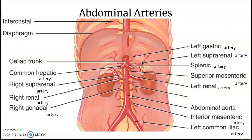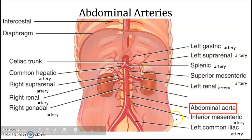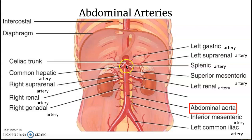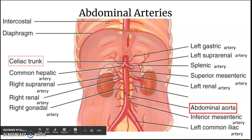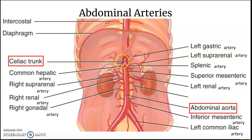Moving on to the abdominal arteries. I always try to identify the largest vessel first. This is the abdominal aorta — it's in the abdominal cavity and it's the aorta. We're going to start off with the celiac trunk, and the trunk branches into three different arteries. We have the left gastric artery.